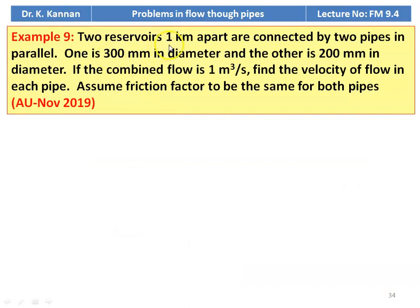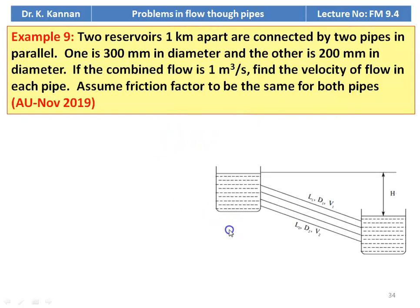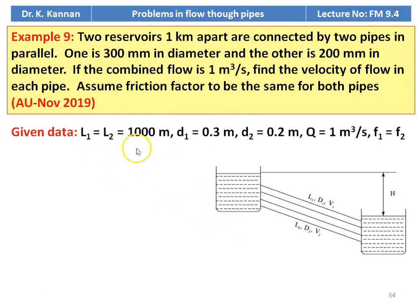Example number 9 from November 2019 question paper. Two reservoirs 1 kilometer apart are connected by two pipes in parallel — one 300 millimeter in diameter and the other 200 millimeter in diameter. If the combined flow rate is 1 meter cube per second, find the velocity of flow in each pipe. Assume friction factor to be the same for both pipes. Data: L1 = L2 = 1000 m, D1 = 0.3 m, D2 = 0.2 m, total Q = 1 m³/s, F1 = F2.